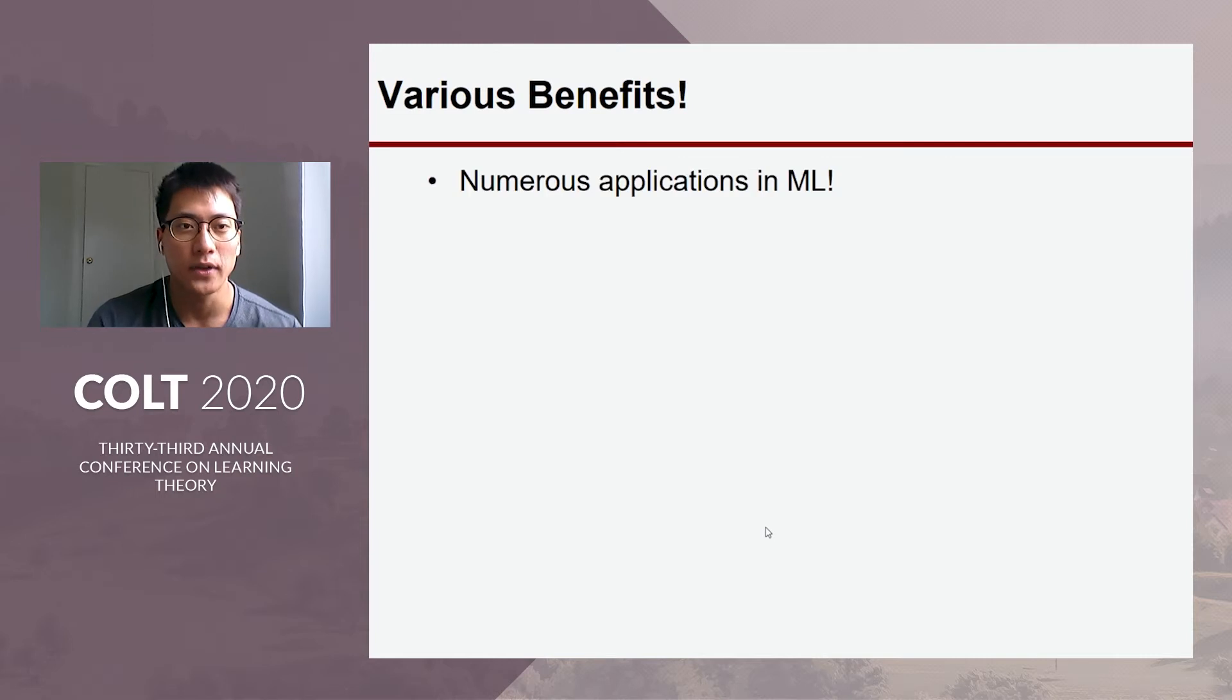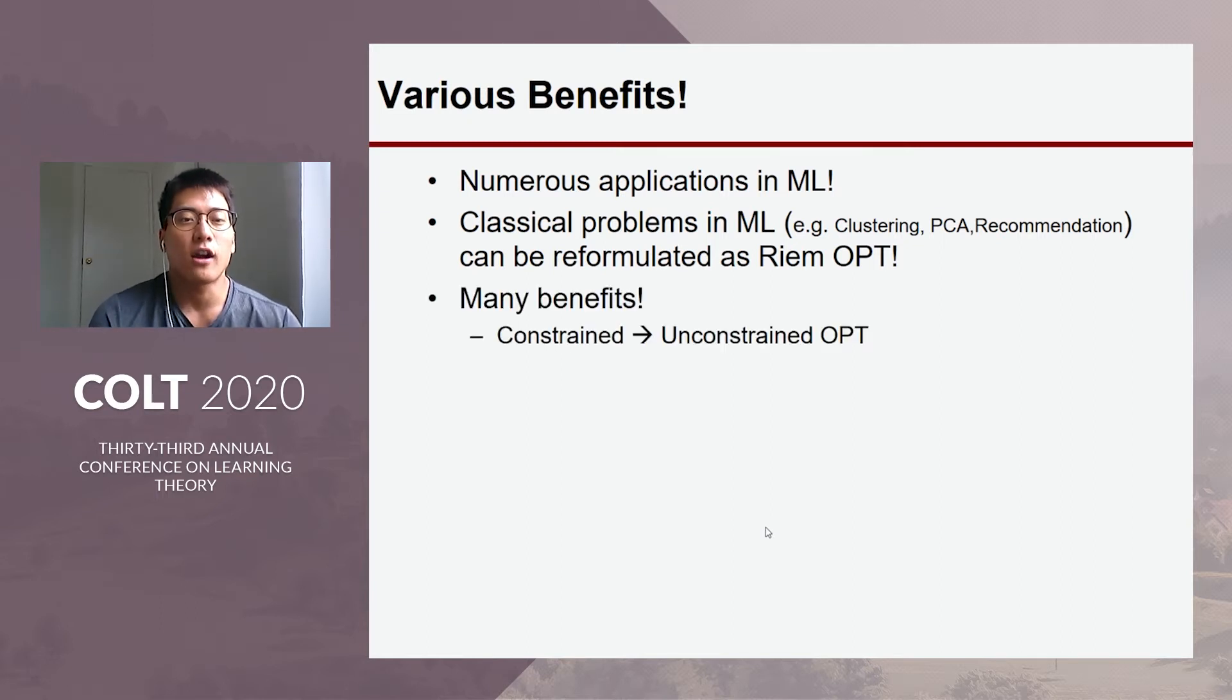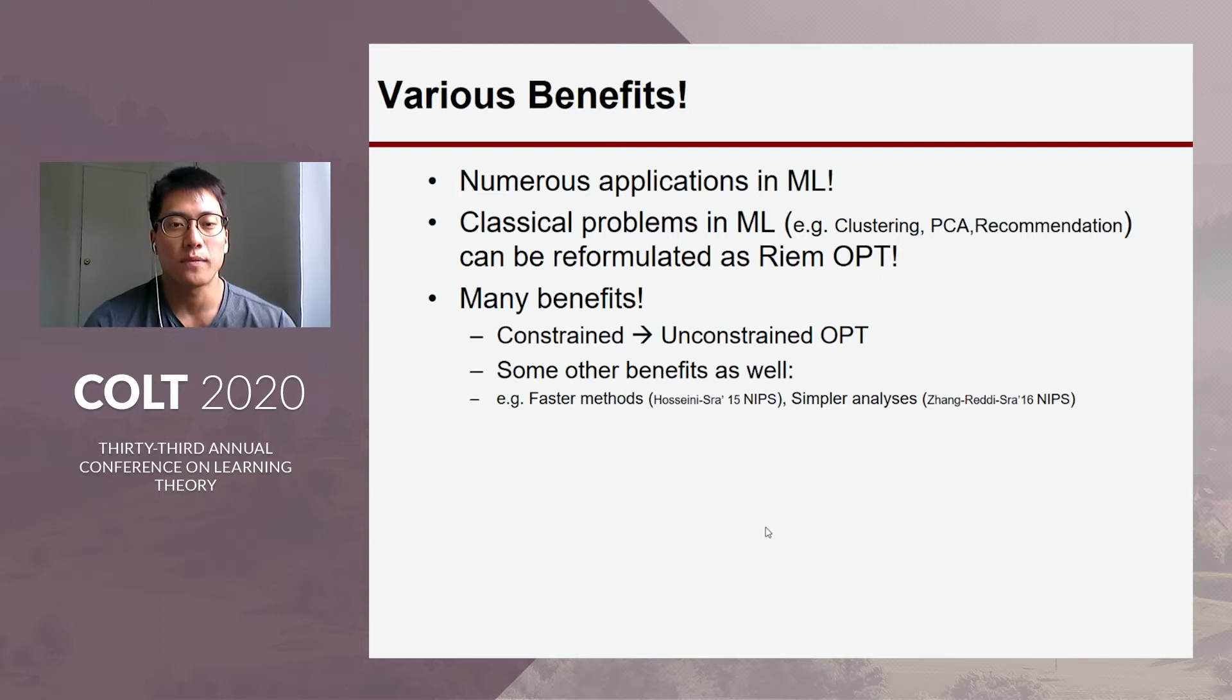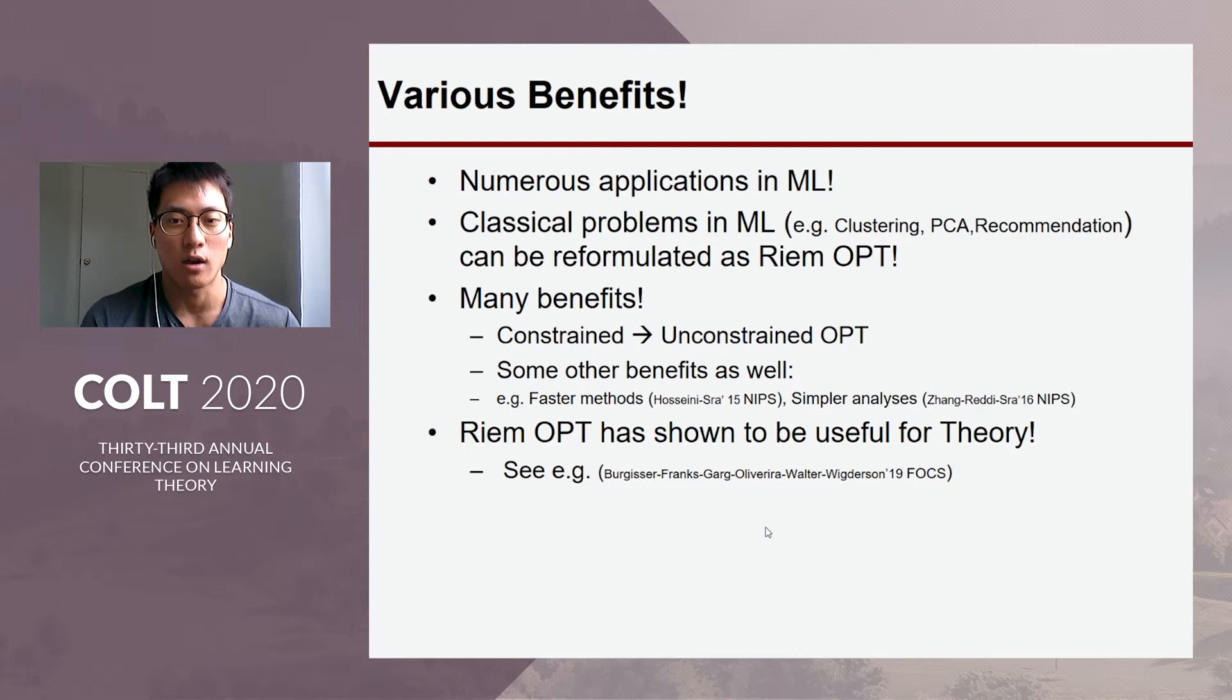Turns out there are many benefits. In particular, even classical problems in machine learning can be reformulated as Riemannian optimization. And there are other benefits as well, apart from making it into unconstrained optimization. Turns out previous work have shown one can come up with faster methods and simpler analysis based on the ideas from Riemannian optimization. Turns out Riemannian optimization is also relevant for theoretical question. For this, please refer to this recent paper.